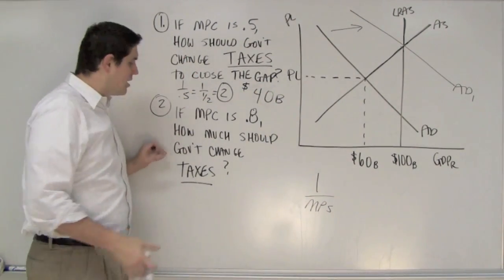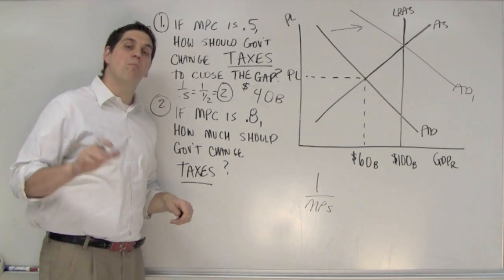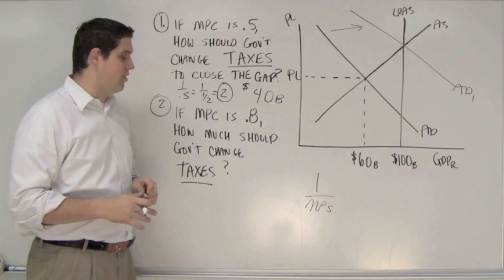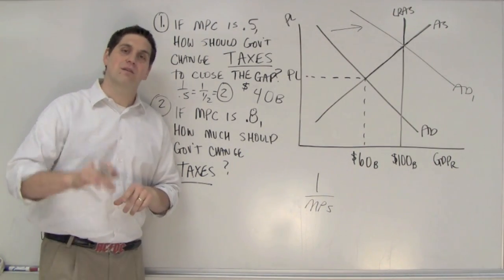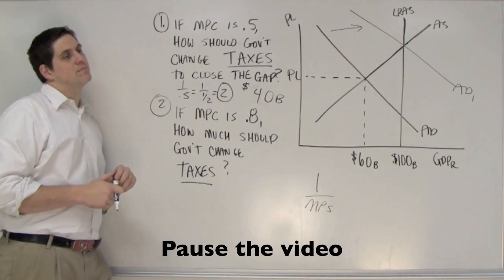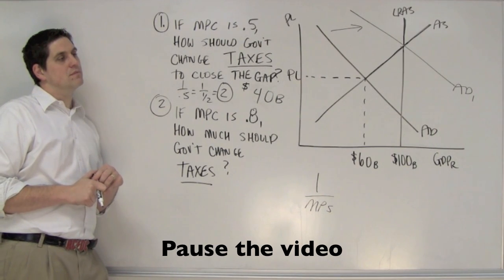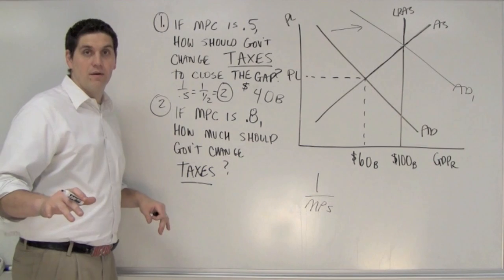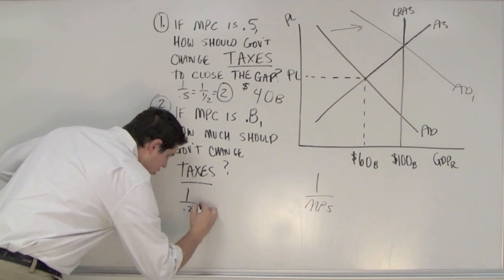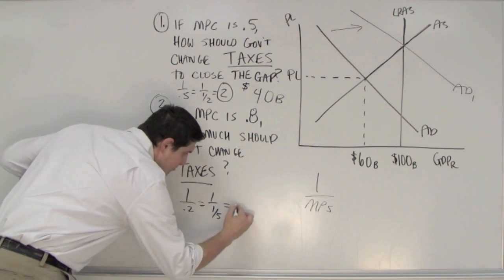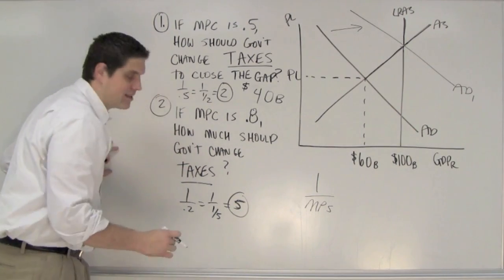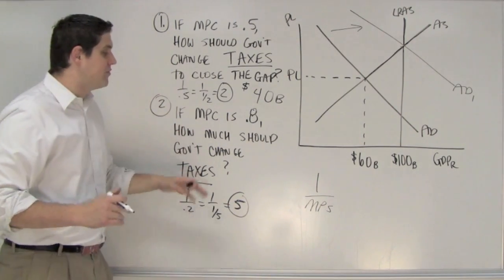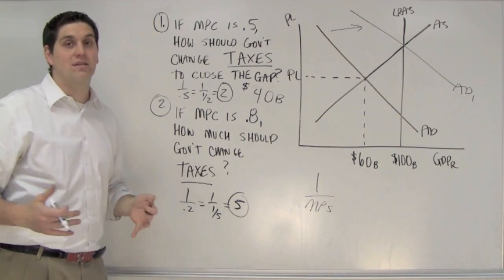Now let's switch it. Let's say the marginal propensity to consume is 0.8, so people only save 0.2 of an increase in their income. How much should the government cut taxes to close the $40 billion gap? Good luck. All right — let's find out. First, let's calculate the multiplier. It's 1 over 0.2, which is 1 over one-fifth, so the multiplier is 5. Any amount of the tax cut that people do not save is going to get multiplied times 5 to close the gap.